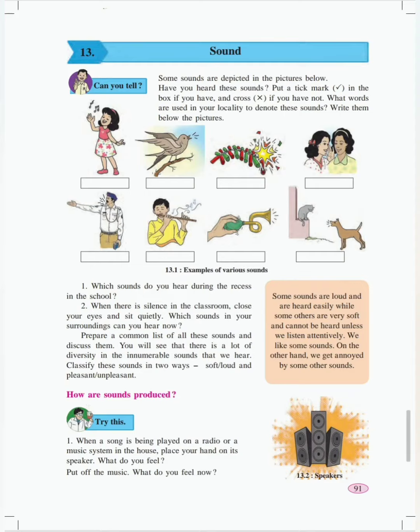Some pictures are shown on textbook page number 91. Find out whether you have heard those sounds or not. A girl singing — yes, we have heard people singing. A chirping bird. Most of the time during evenings you can see that there are different birds chirping. Crackers bursting.